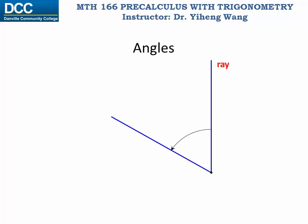Angles are normally represented by Greek letters; in this case let's call it theta. The initial position of the ray is called the initial side of the angle, the final position is called the terminal side of the angle, and the endpoint is called the vertex of the angle.